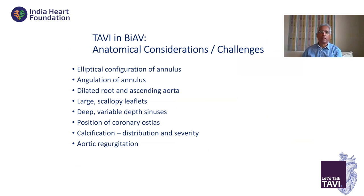The challenges for bicuspid anatomy include elliptical annulus configuration, angulation of the annulus relative to the root and ascending aorta, dilated root and ascending aorta. Very large scallopy leaflets can challenge both crossing the valve and may impact coronary arteries after deploying. They tend to have variable depth in sinuses, so traditional sinus alignment may not work for all bicuspid valves. You must know the position of the coronary ostia — the right coronary artery ostium can be very low. Calcification and its distribution is truly the Achilles heel for treating bicuspid valve using TAVI technology.